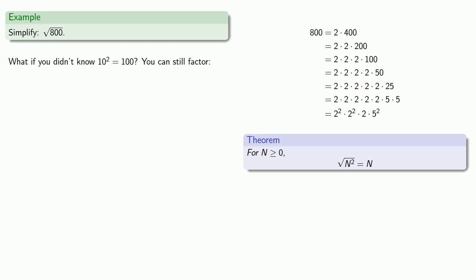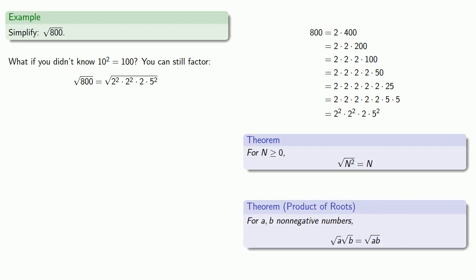Equals means replaceable, and so 800 can be replaced with 2 squared times 2 squared times 2 times 5 squared. We have a square root of a product, so we can rewrite this as the product of the square roots. Square root of 2 squared is just 2. We have a square root of 2, we still have a square root of 2. And square root of 5 squared is 5.